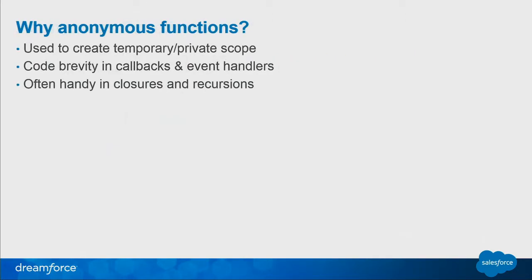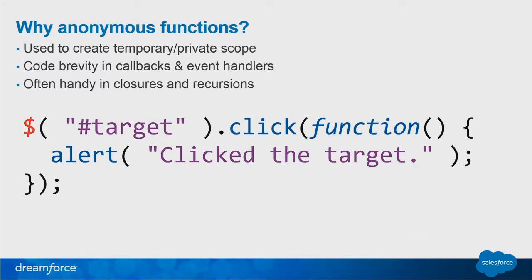So why do you use anonymous functions? They're used to create private scope — temporary and private scope. It's something you use if you just want to call something once. It's also very important in code brevity; for example, on a click event, you don't really have to use a named function — you can just have the anonymous function be the result of the click event itself. They're also often used for handling closures and recursions. Recursions are functions that call themselves, whereas closures are functions returned from another function. I could go more in-depth into both, but each one can have its own session and we don't really have that much time.